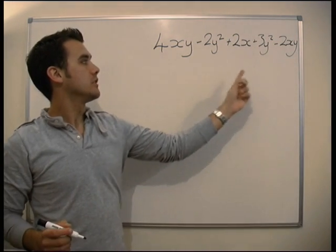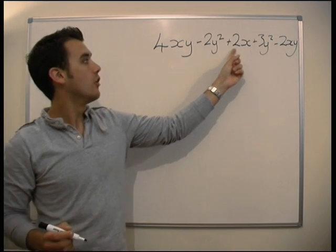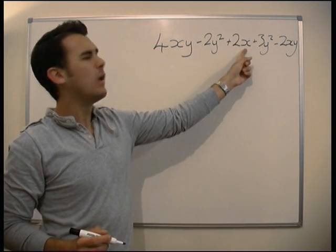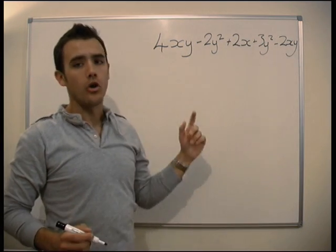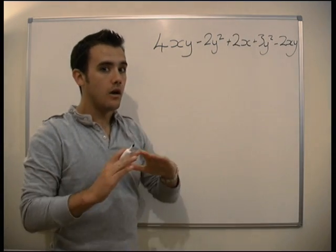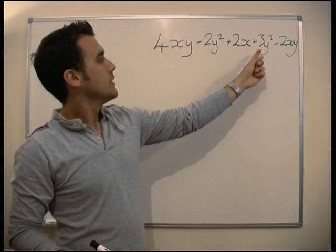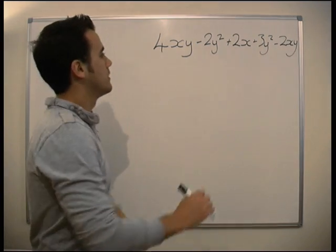So 4xy, where are the like terms? 2y², is that a like term? No, it certainly is not. Plus 2x, is that a like term? Well, this has got 4xy, but they're not like terms. This is 4xy, it's only something with an x and a y that we can use. Plus 3y², no, again not like. Minus 2xy, yes, great.